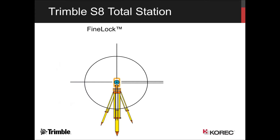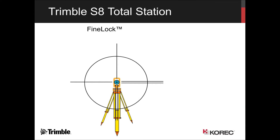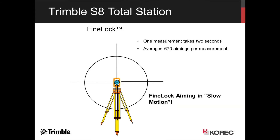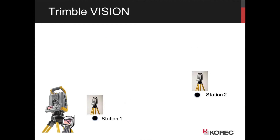Fine lock — if you imagine aiming onto a prism manually, depending on how much of a perfectionist you are, you're going to be wandering around that prism a little bit. Fine lock basically takes many, many aimings of that prism over a two-second period to guarantee excellent accuracy. It also has a very narrow field of view, so you can set prisms up very close together and still differentiate between them.